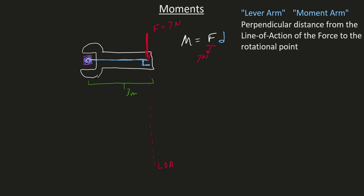We just need to calculate the length of that lever arm, which appears to be 3 meters. So 7 times 3 is 21. The moment that this force creates about that bolt is 21 Newton-meters.